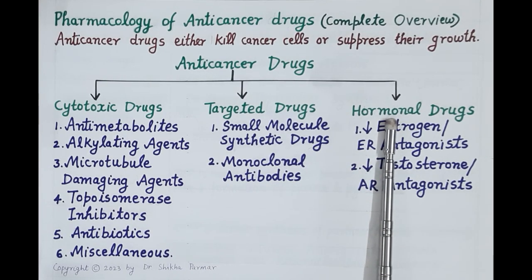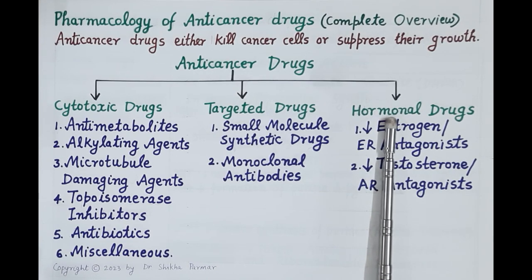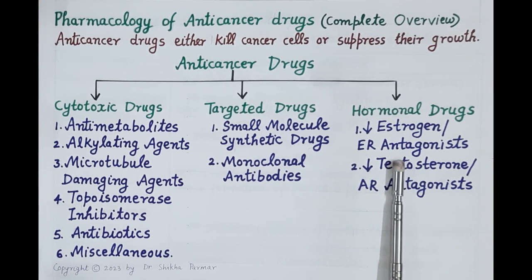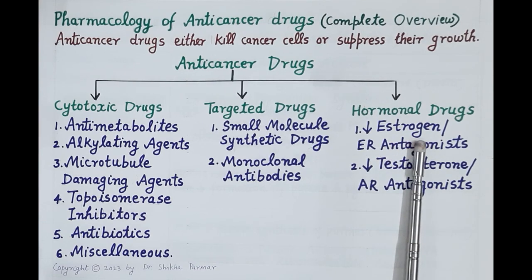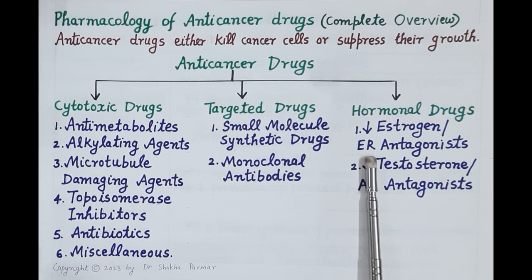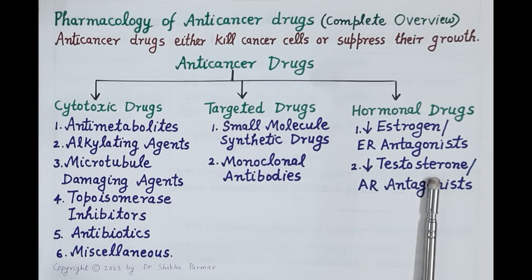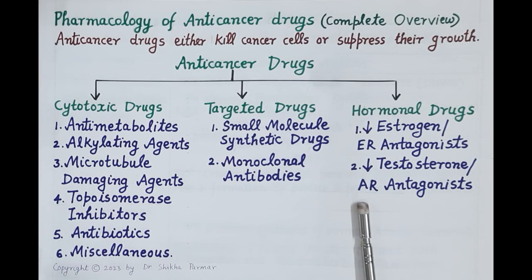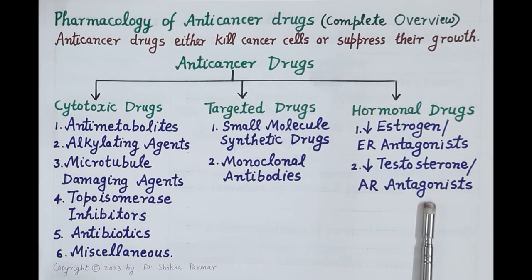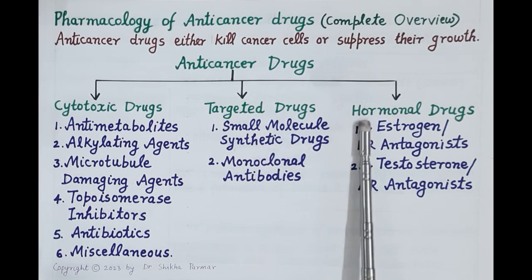Hormonal drugs are used to treat cancers that utilize hormones for growth. Increased estrogen is a risk factor for breast cancer, while increased testosterone is a risk factor for prostate cancer. Drugs used in breast cancer either reduce the secretion of estrogen or they block the estrogen receptors and are estrogen receptor antagonists. Similarly, drugs used to treat prostate cancer either reduce secretion of testosterone or they block the androgen receptors. Now let's discuss in brief the pharmacology of each category of cytotoxic, targeted, and hormonal drugs.